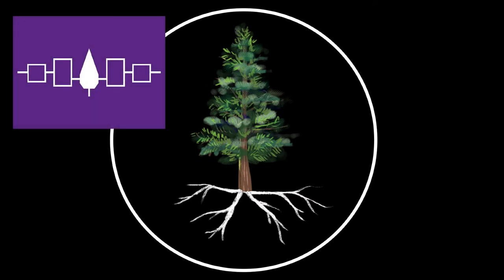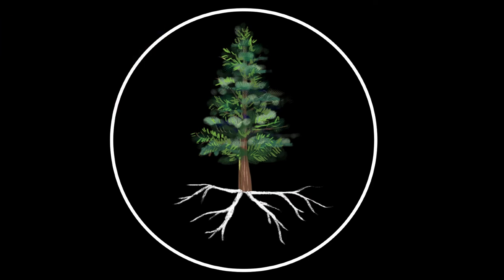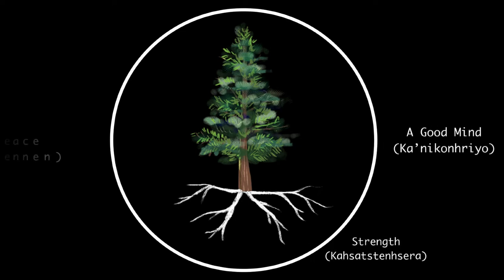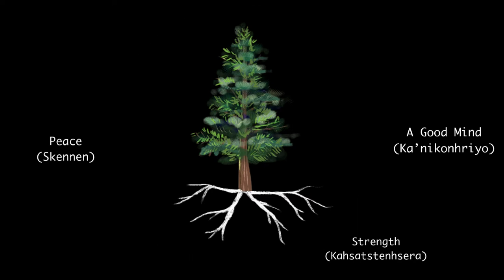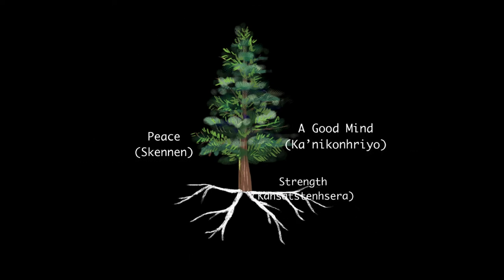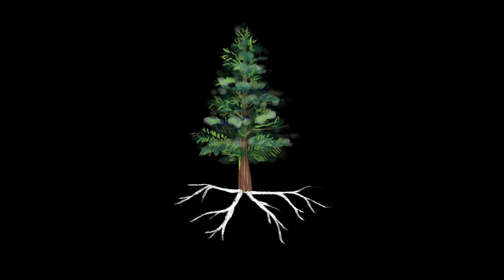This tree reflects the core values of the Haudenosaunee Great Law of Peace: A Good Mind — Ganivonrio; Strength — Gassastansara; and Peace — Skana. The question is, how can we bring these values into the classroom to create a peaceful community?